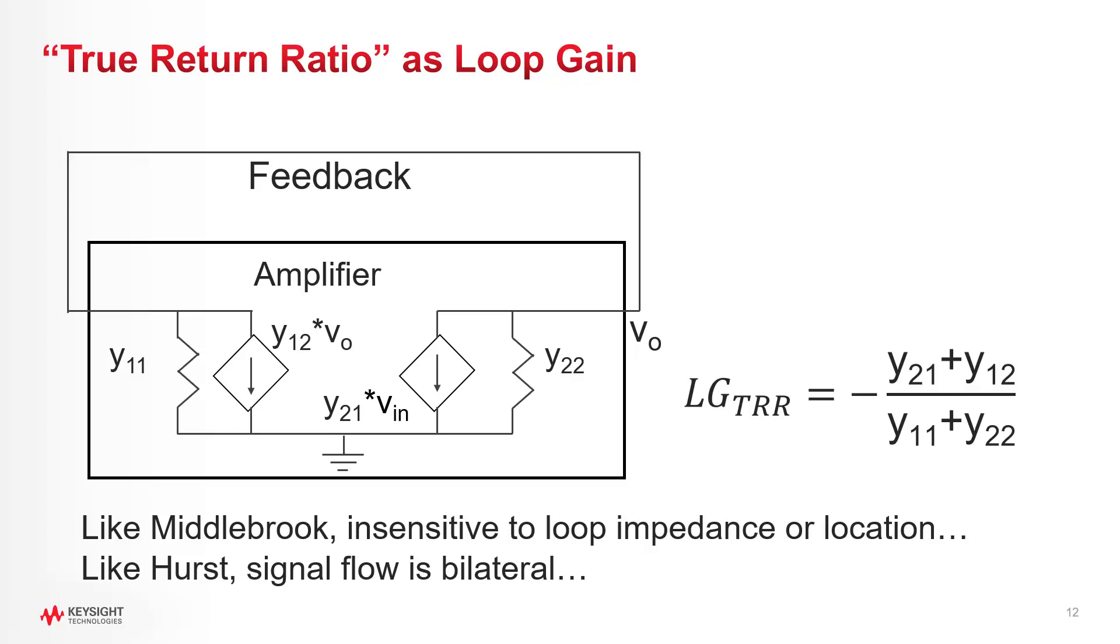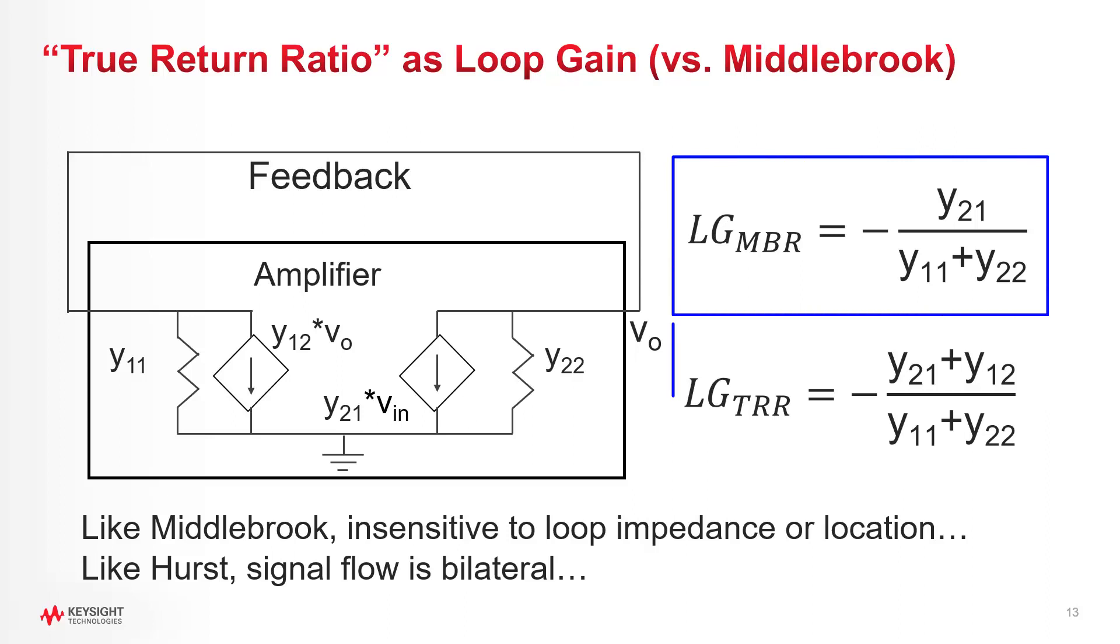That said, this is where my complaints about this technique really end. It turns out that if you view the True Return Ratio as more of a loop gain, you start to see it's a really good derivation. Maybe it's the best kind of derivation you can get from outside of the device. If you refer back to video number three, this True Return Ratio loop gain derivation combines the impedance insensitivity of Middlebrook's null injection technique with the bilateral nature of the Hurst technique. And to prove it to you, you can actually use Middlebrook's approach on the same topology to get loop gain. And you get this value on the top. And then loop gain derived by Tian is this value on the bottom. And the only difference is that Tian's version includes the reverse gain term. So that makes it bilateral as opposed to Middlebrook's term, which is just unilateral.